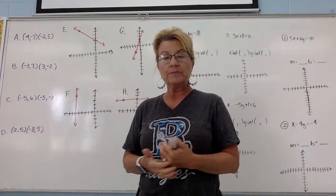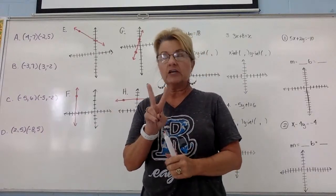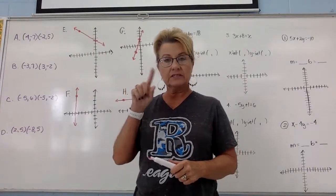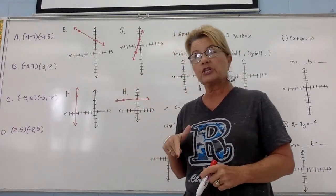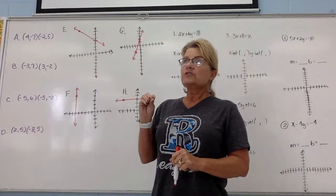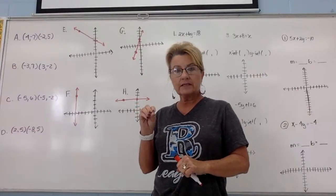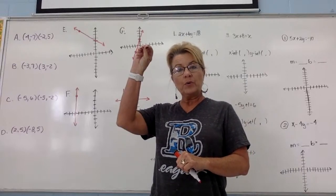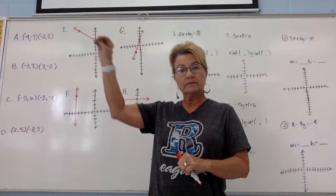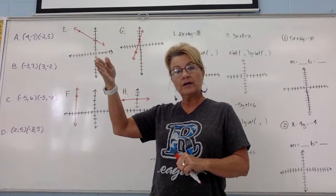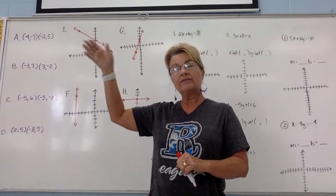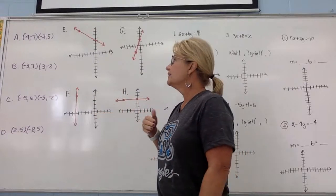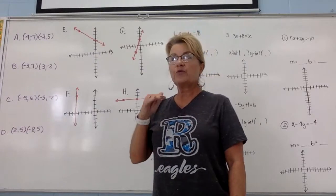There are two ways you can find slope: algebraically through a formula, and on the top of your notes you have the formula for slope. Physically, slope is the rise and the run from one point to the next point — you rise and then you run, and that kind of looks like stairs. That's what we relate to slope as far as movement.